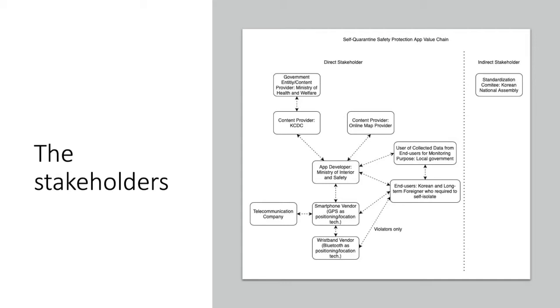This app can be installed in Android and iOS smartphones which have GPS capability, which are provided by smartphone vendor companies such as Samsung, Apple, LG, and so on. Along with smartphones, wristbands are also being used especially for the violators, which is provided by the government. To operate the app such as submitting their daily symptoms and providing their location information to the caseworkers, internet connection is needed, which is provided by telecommunication companies in South Korea such as KT Corporation, SK Broadband, LG Uplus Corporation, and so on. The local government is the one that uses the information collected by this app to monitor those in quarantine, which are the end users.